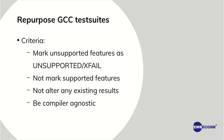So we followed a few criteria. First, we needed to mark unsupported features as unsupported — as x-fail or expected-fail — not as unexpected failures, as would happen without these changes. Then, not to mark supported features as unsupported. Of course, not to alter as much as possible the existing previous results of the GCC test suite, and to make the changes as completely compiler-agnostic.